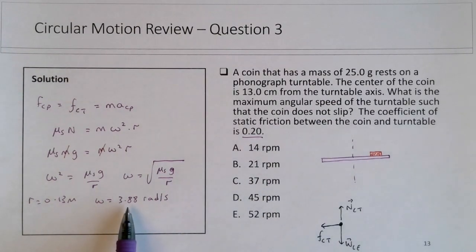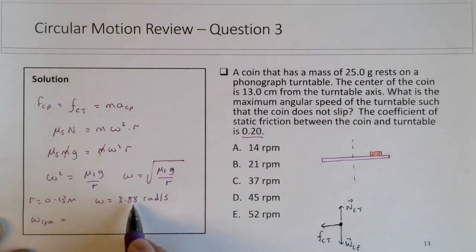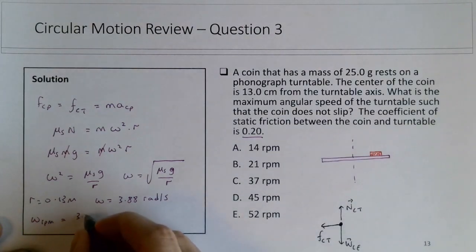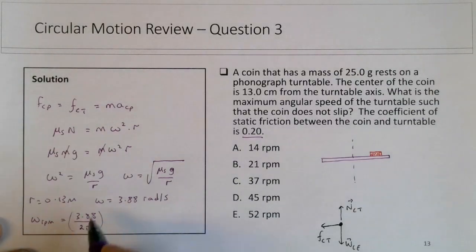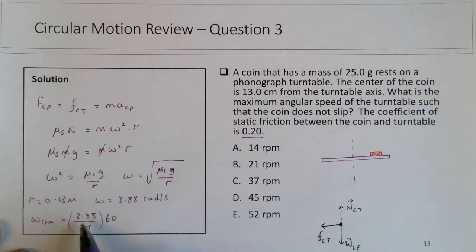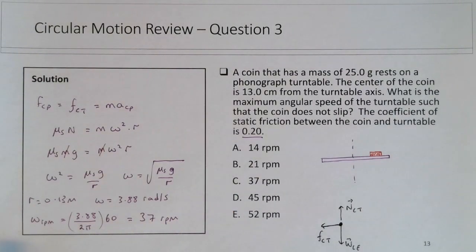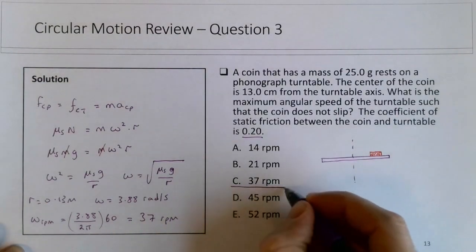So to get this omega into RPM, we want to find out in a sense what is 3.88 of a revolution. There are 2 pi radians in a revolution, so I want to do 3.88 divided by 2 pi, so that would tell me how many radians this is of a full revolution. This is happening per second, so then I want to multiply by 60 to figure out how many revolutions happen per minute, and this should give you 37 RPM, which is in this case, choice C.